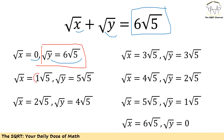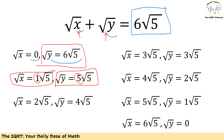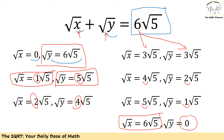Now let's give something to radical x. We can have radical x equals 1 times square root of 5 and radical y equals 5 times square root of 5. Moving forward, radical x equals 2 square root of 5 and radical y equals 4 square root of 5. We can also split 6 square root of 5 into 3 square root of 5 and 3 square root of 5. Then radical x equals 4 square root of 5 and radical y equals 2 square root of 5. Radical x equals 5 square root of 5 and radical y equals 1 square root of 5. Finally, radical x equals 6 square root of 5 and radical y equals 0.